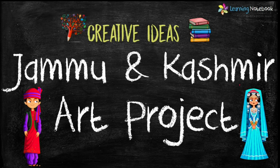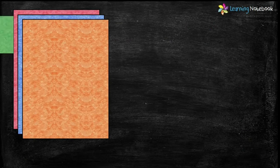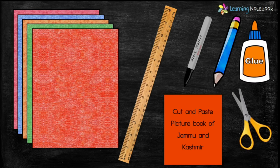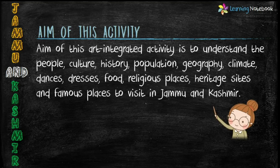We will talk about its geography, people, culture, history, dances, dresses, food and famous places to visit in Jammu and Kashmir. For this activity we need few colorful A4 sheets or a scrap file, a ruler, a black marker pen, a pencil, cut and paste picture book of Jammu and Kashmir, a pair of scissors. The aim of this art integrated activity is to understand the people, culture, history, population, geography, climate, dances, dresses, food, religious places, heritage sites and famous places to visit in Jammu and Kashmir.